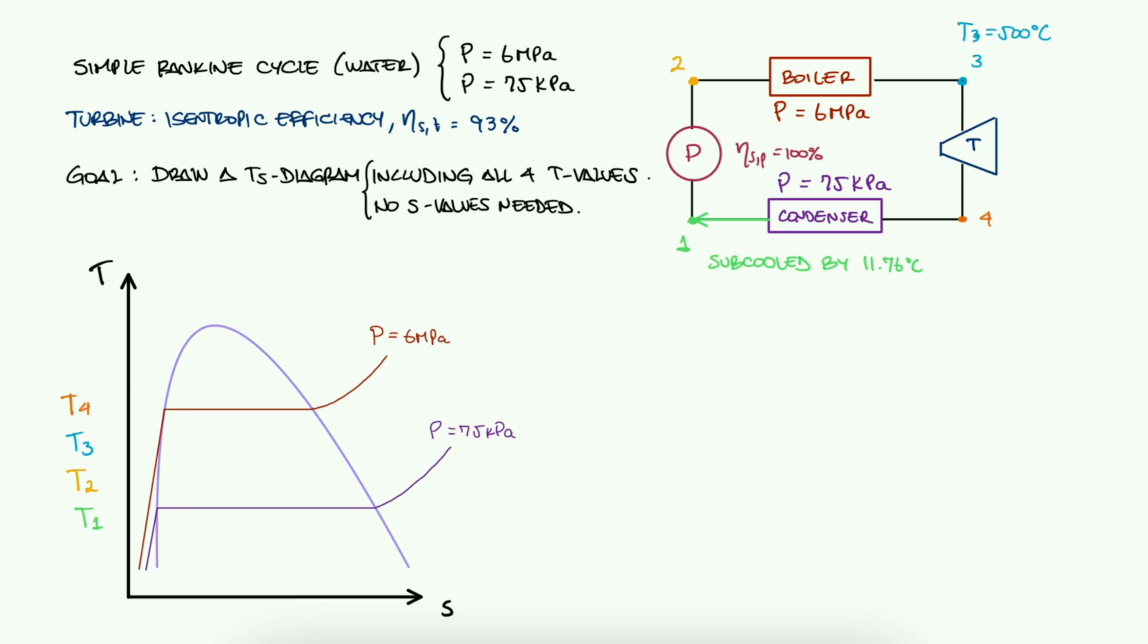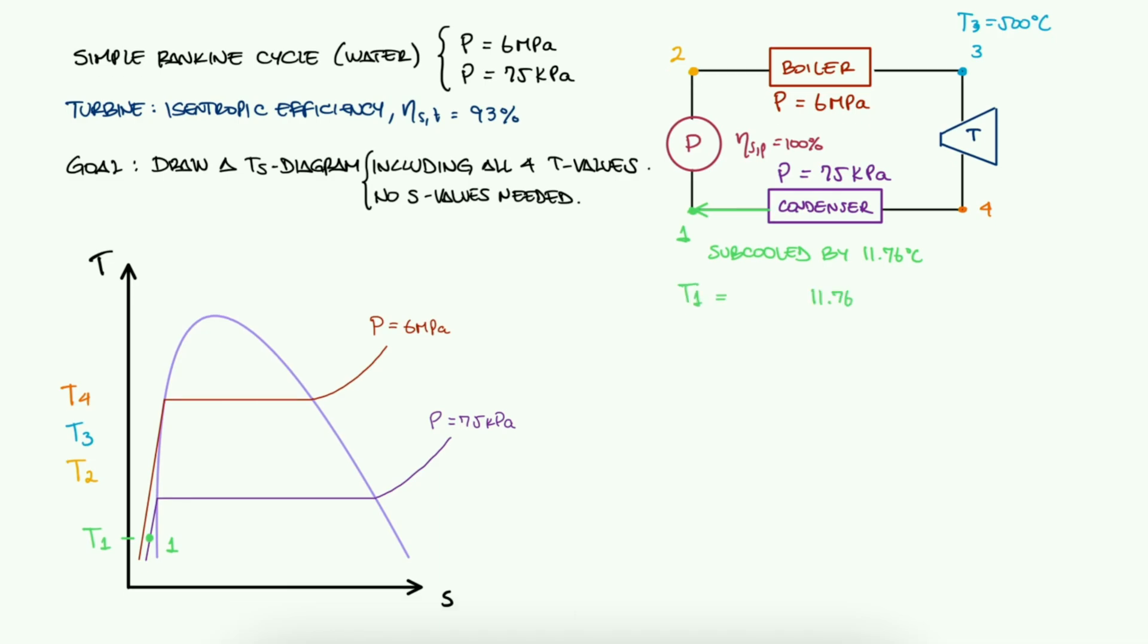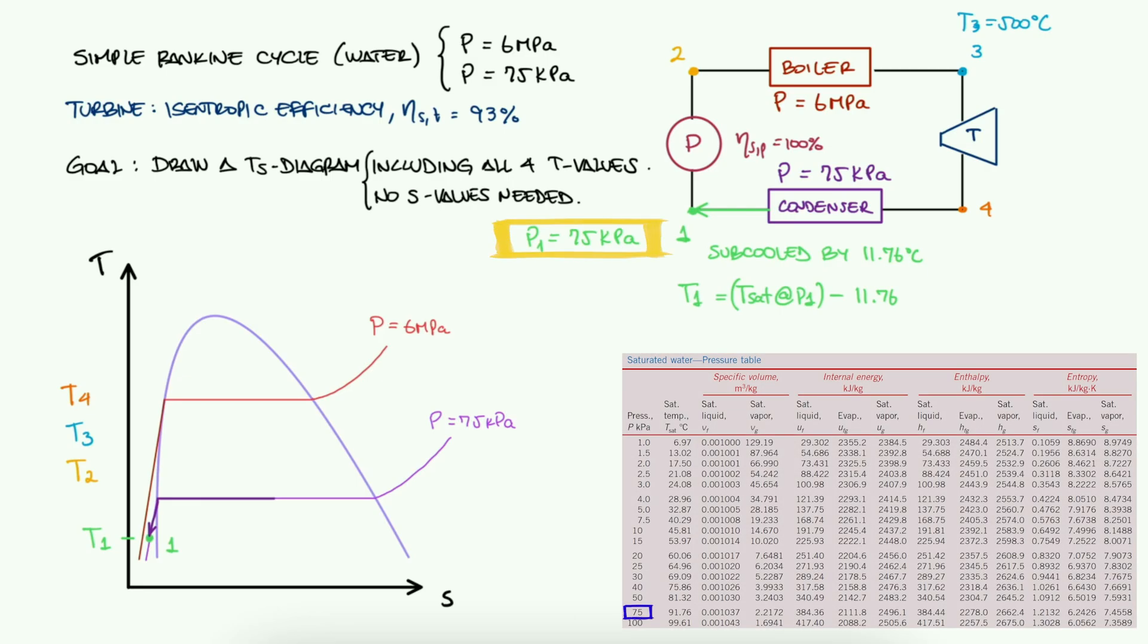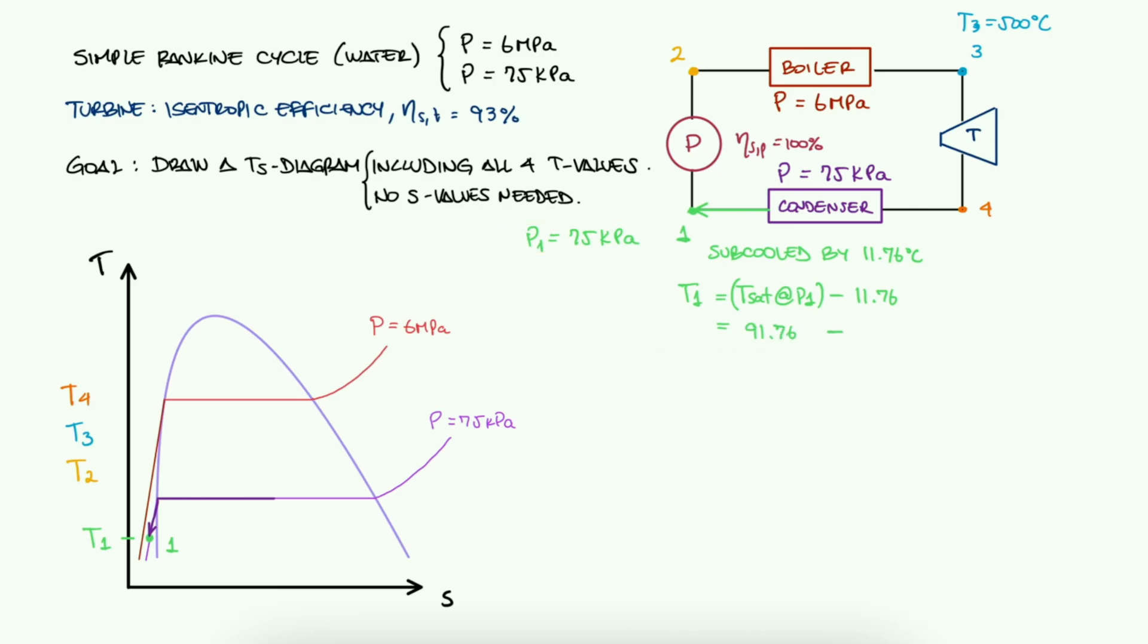We're being told that the water is at a subcooled state after leaving the condenser. This just means that the final temperature of the water at state 1 is 11.76 degrees lower than the saturation temperature for the condenser's pressure, still on the same constant pressure line that the condenser operates at. So we look up the saturation pressure at 75 kPa and we find it to be 91.76 degrees Celsius. This means that T1 is 80 degrees Celsius.